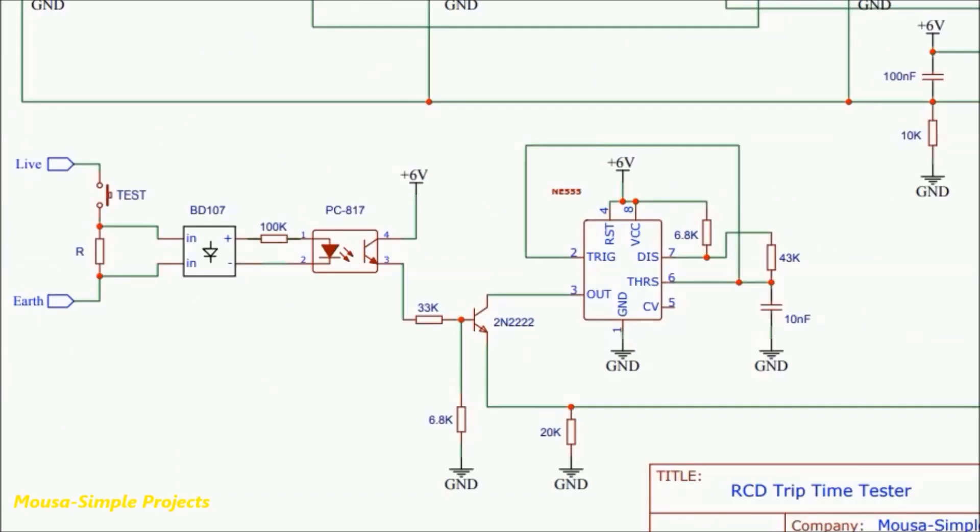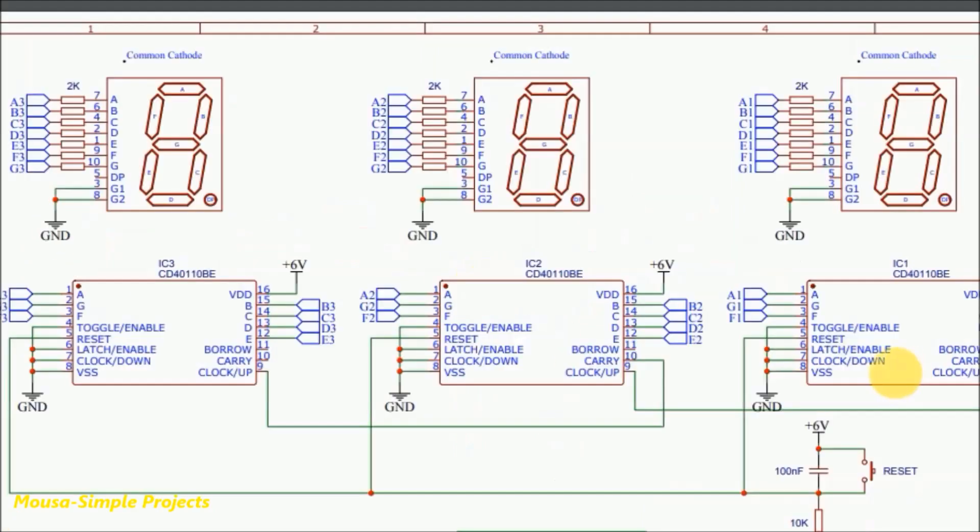But it stops counting when the RCD traps, because there is no more voltage across this resistor to keep the transistor on. So this 7-segment display shows you how long the RCD takes to react to any leakage current.